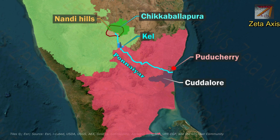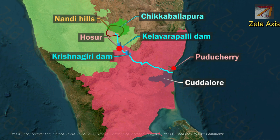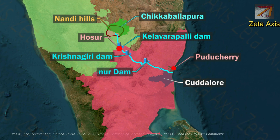Kilovarapalli dam is built across the river near Hosur. The Krishnagiri dam and Santharu dam are also built on the Purnayar river.